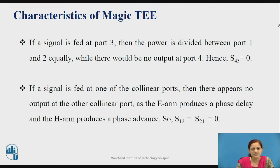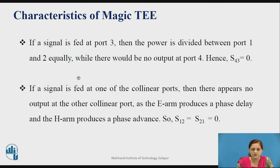If the signal is fed at port 3, then the power is divided equally between port 1 and port 2, while the output at port 4 is equal to 0. That is, if the input is applied to port 3, the output at port 4 is equal to 0 — denoted as S43 equal to 0. S43 is one of the scattering coefficients of the Magic T junction. If the signal is fed at one of the collinear ports — that is, port 1 or port 2 — then there appears no output at the other collinear port, as the E arm produces a phase delay and the H arm produces a phase advance. Therefore, S12 equal to S21 equal to 0.